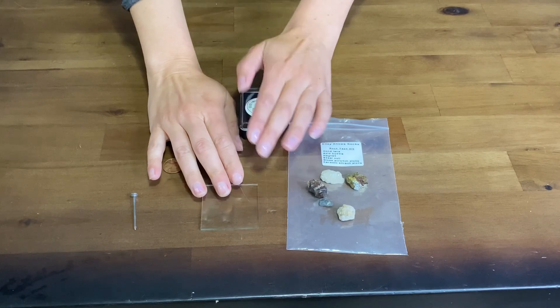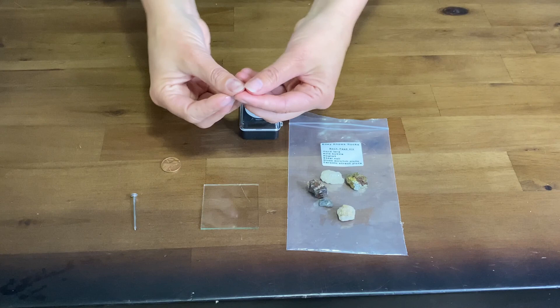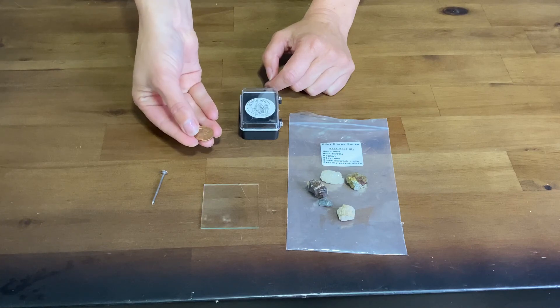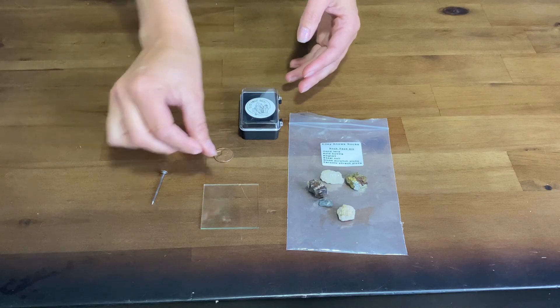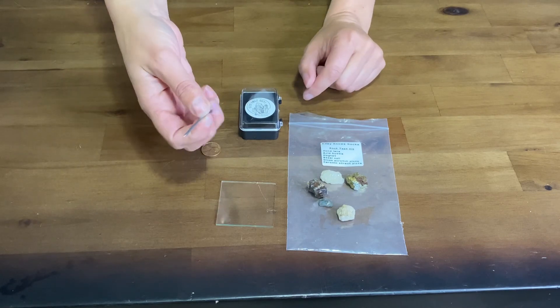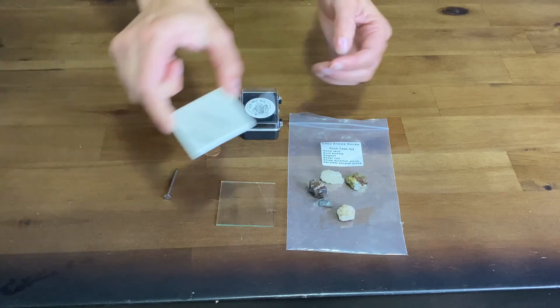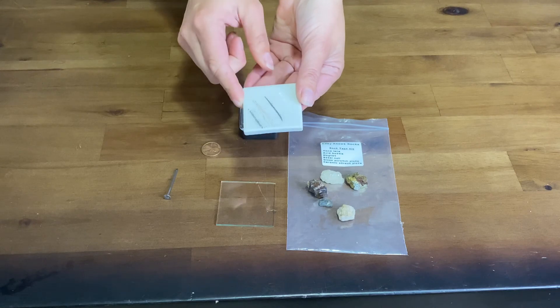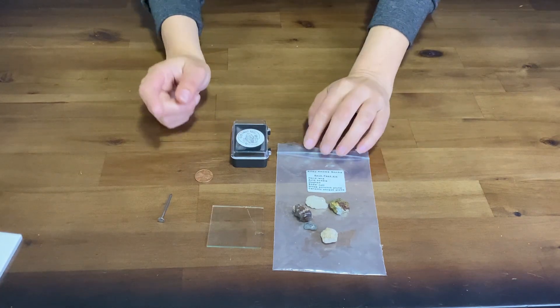A mineral's hardness can be determined by several different tools. We can use our fingernails which are about a 2 to a 2.5. A copper penny which is about a 3.2 to 3.5 hardness. A glass plate which is about a 5.5 hardness and a steel nail which is about a 6.5 hardness. Then the streak plate which is about a 7. The streak plate will scratch glass and quartz will actually scratch the streak plate. Now let's observe what I'm talking about.